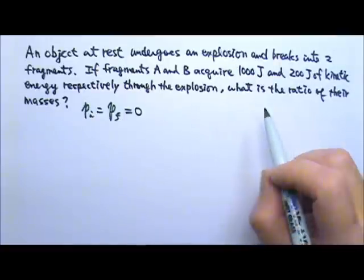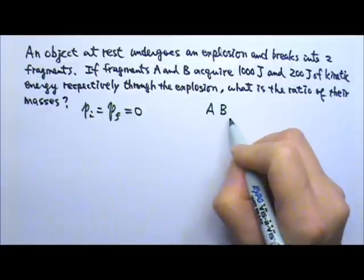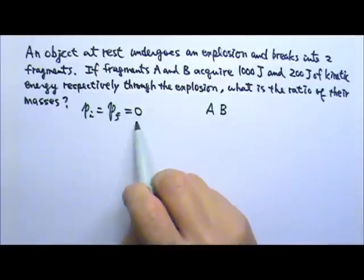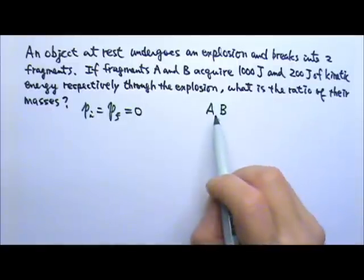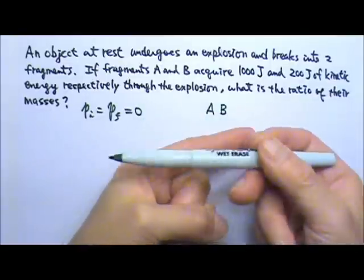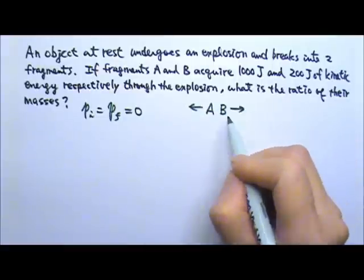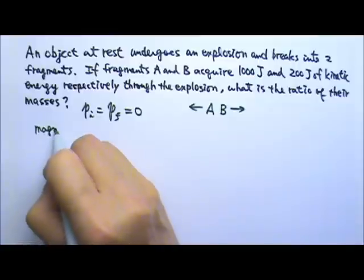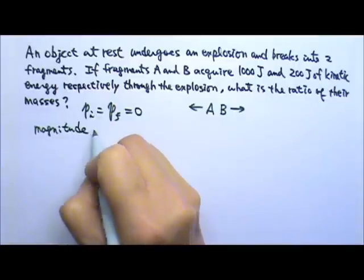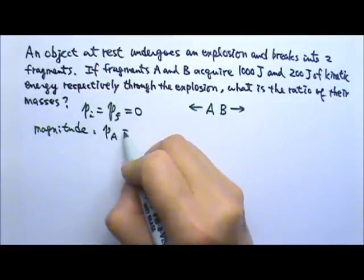After the explosion, the object breaks into two fragments A and B. If the total momentum must be zero, then A and B must have equal magnitude but opposite direction momentum so they can cancel. The magnitude of momentum of A and B must be equal.